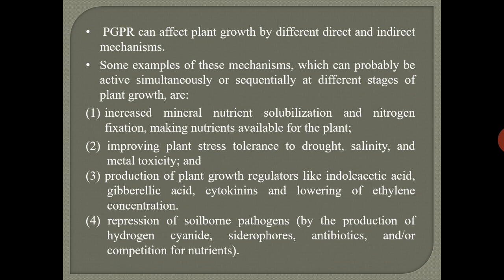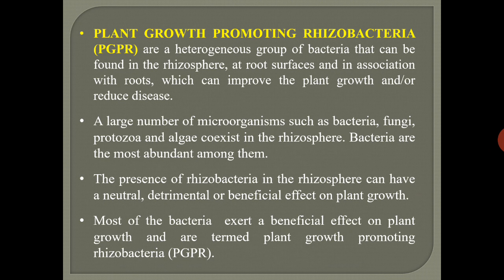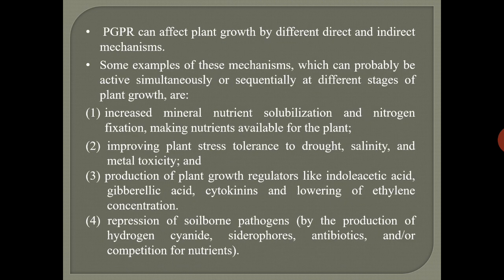Plant growth promoting rhizobacteria are a heterogeneous group of bacteria that can be found in the rhizosphere, as well as on the root surfaces and in association with roots, that improve plant growth and reduce diseases. A large number of microorganisms such as bacteria, fungi, protozoa, and algae all coexist in the rhizosphere. Bacteria are the most abundant among them. The presence of rhizobacteria in the rhizosphere can have a neutral, detrimental, or beneficial effect on plant growth.